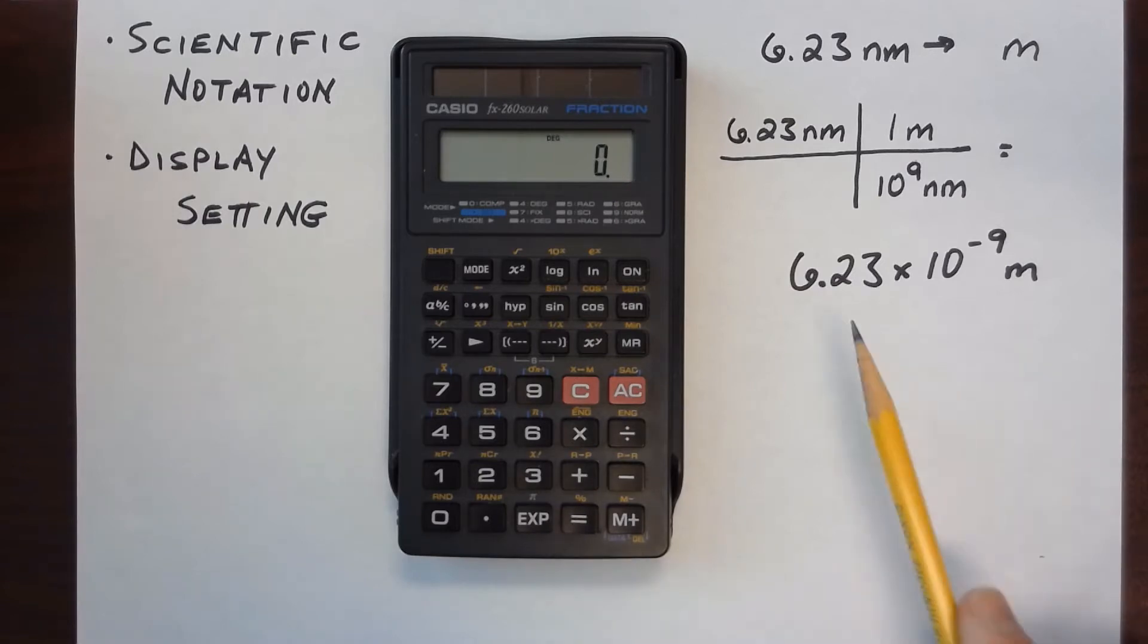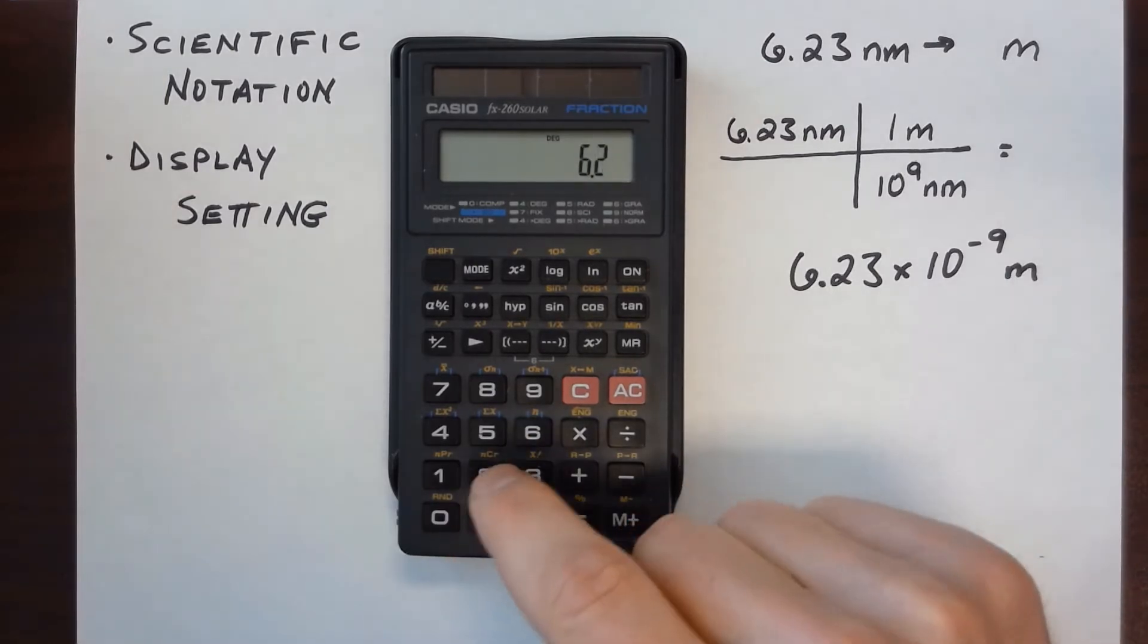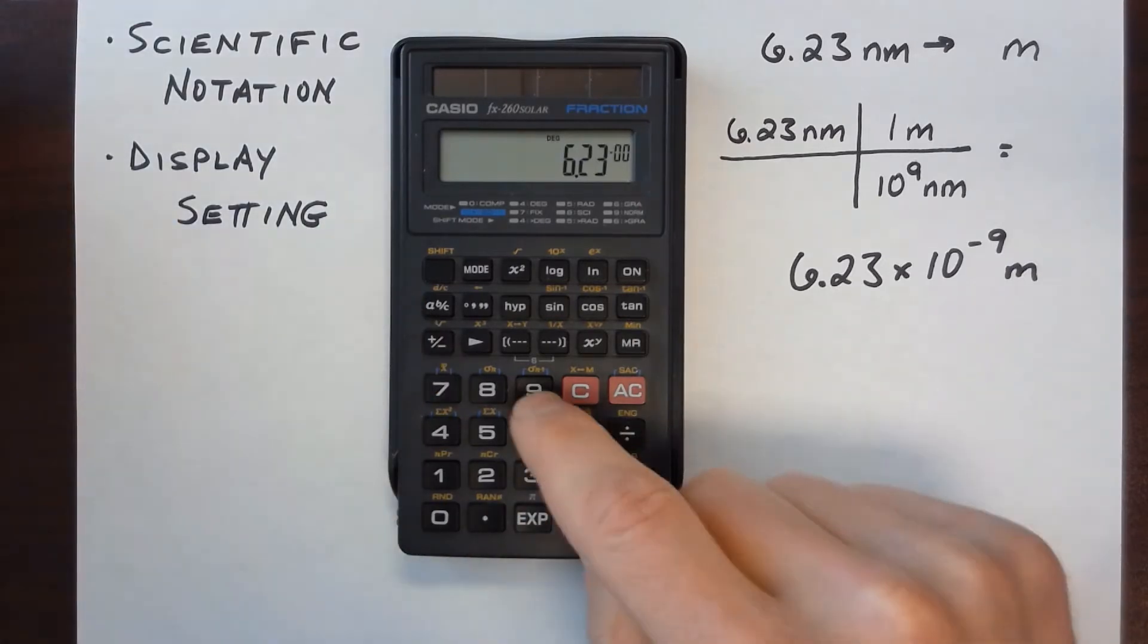So if I want to enter this number into the calculator using scientific notation, I would enter 6.23, the EXP, and then I want to enter minus 9.